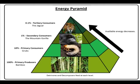Examples of consumers include herbivores, carnivores, and omnivores. Herbivores only eat plants and are primary consumers. Carnivores only eat animals and are secondary or tertiary consumers. Omnivores eat both plants and animals.